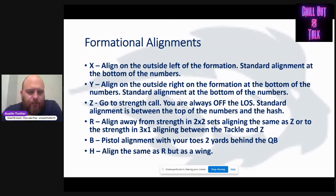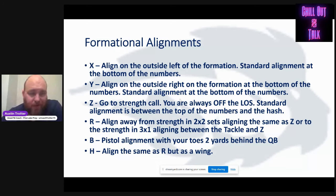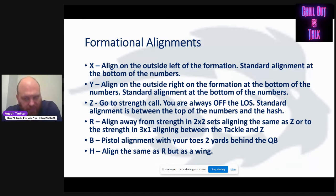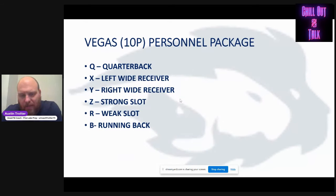Our typical alignments: the X is on the outside left at the bottom of the numbers. The Y is on the right-hand side. The Z is our slot and goes to the strength. Our R — kind of a rover running-back/receiver guy — aligns away from strength in two-by-two and to the strength in three-by-one. We teach everything from a pistol alignment, so if we want to go offset, nothing changes for them. If we have an H-back, he replaces the R most of the time.